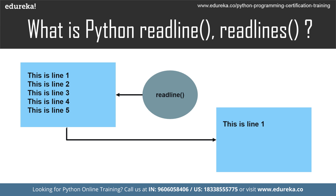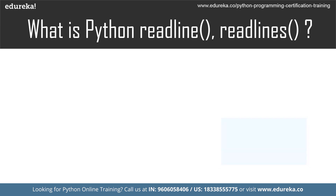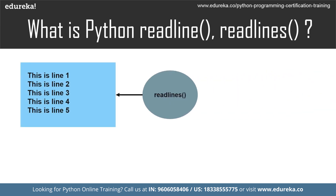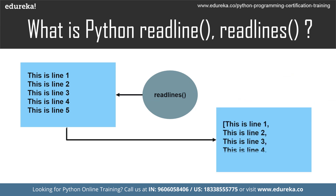Now let us take a look at what is the readlines method. Python file method readlines reads until the end of file using readline and returns a list containing the lines. If the optional size hint argument is present, instead of reading up to the end of the file, whole lines totaling approximately that size in bytes are read. In other words, you can use Python readlines method to get all the lines in the file in a list, where each line is an element in the list.